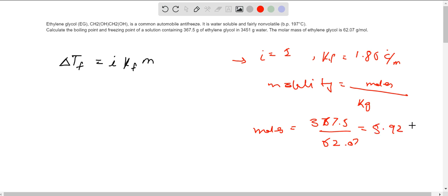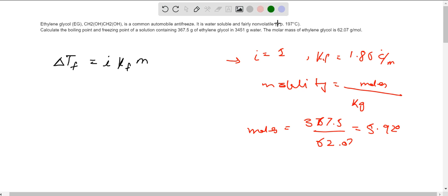So the number of moles we have is 5.920. The mass of water in kg is 3.451 kg, so the molality we get is equal to 1.715 m.